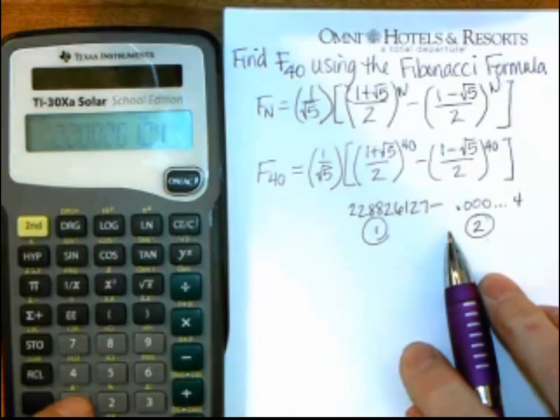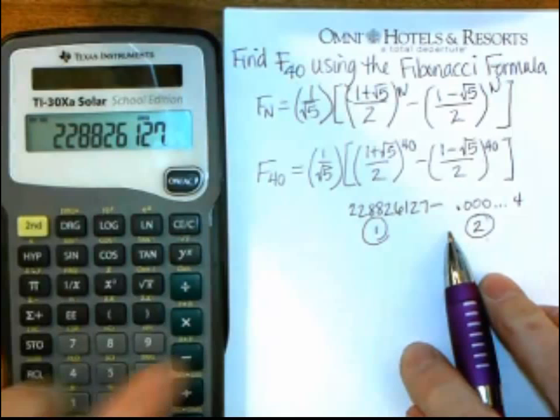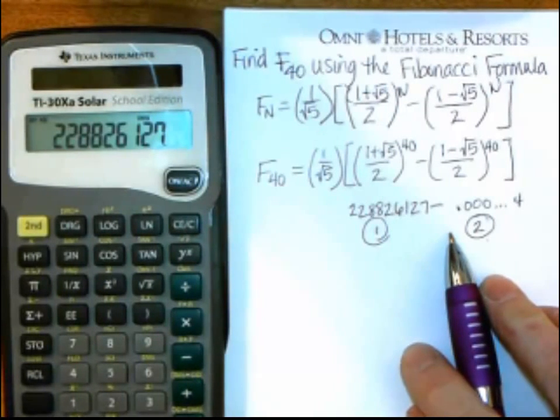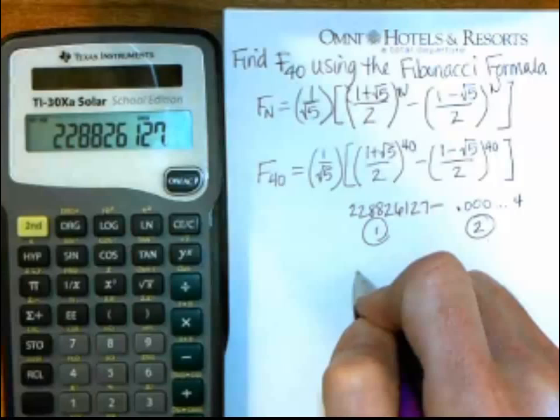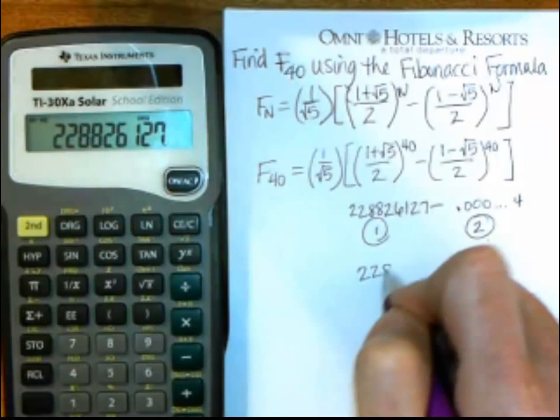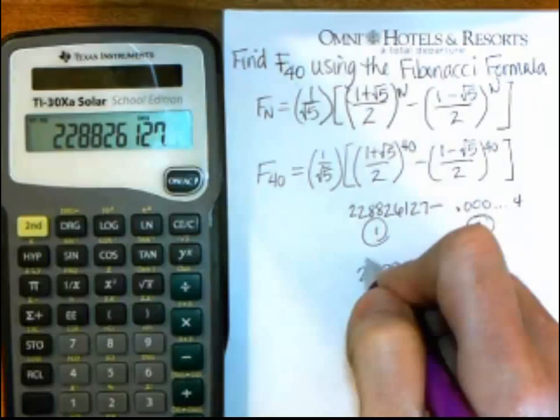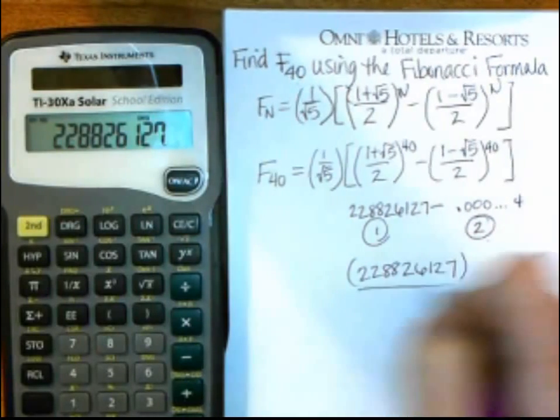And now you can see I need to do bin 1 minus bin 2, so recall 1, there's my big number, minus recall 2, there's my tiny number, equals, and so I have 228826127, and remember that'll be the same thing.